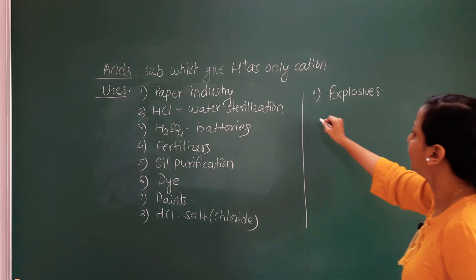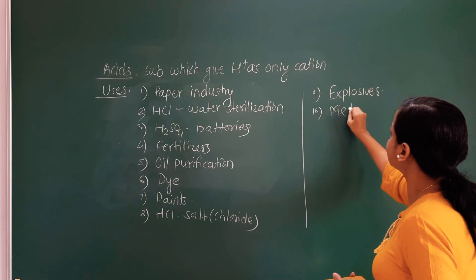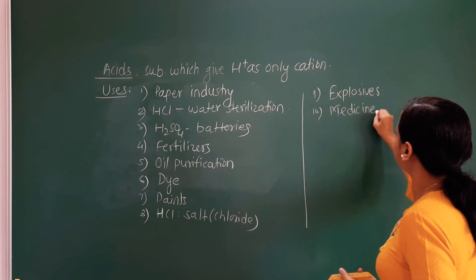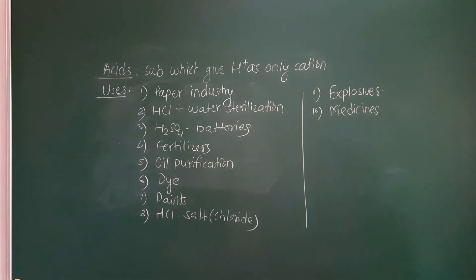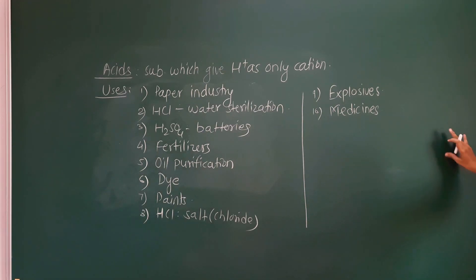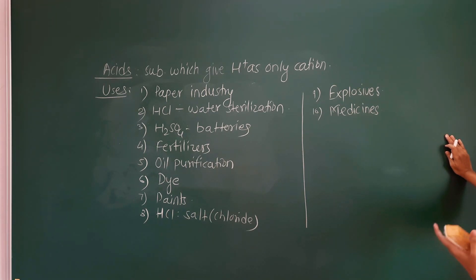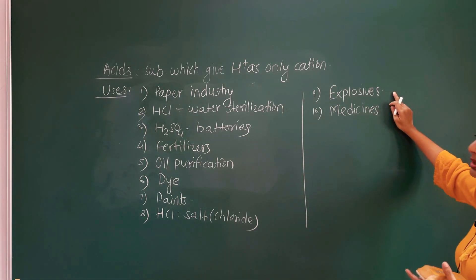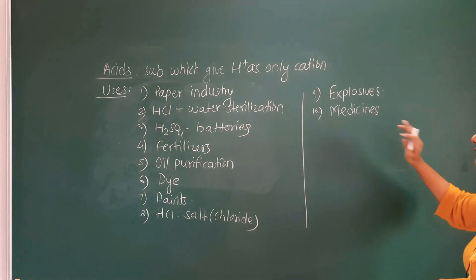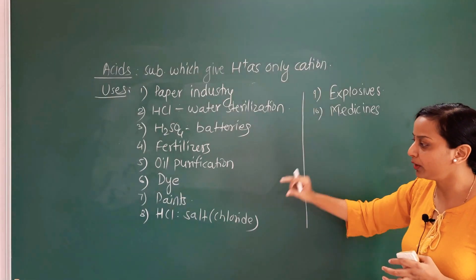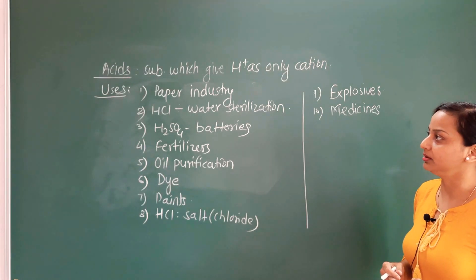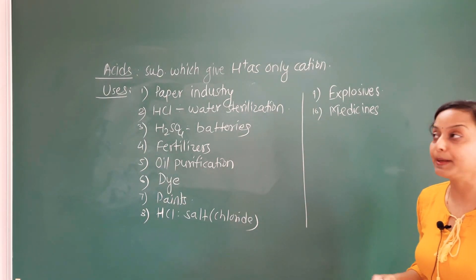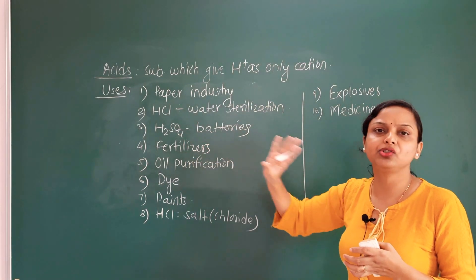We also have to look at the use of acids in medicines. So, in the paper industry, water sterilization, batteries, fertilizers, oil purification, dyes, paints, salts, explosives, and medicines — these 10 uses are the main applications of acids. We have to elaborate on these 10 points.